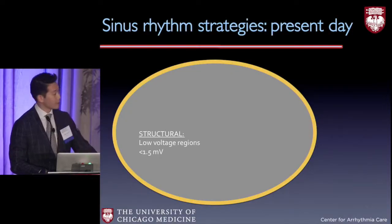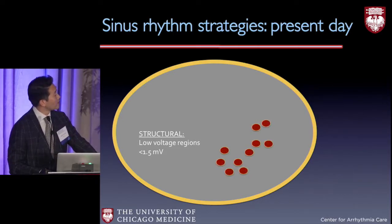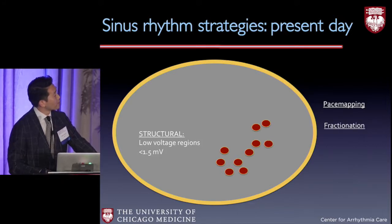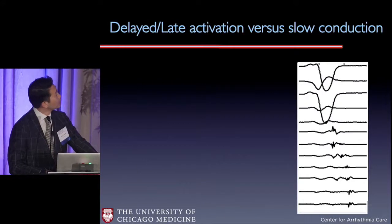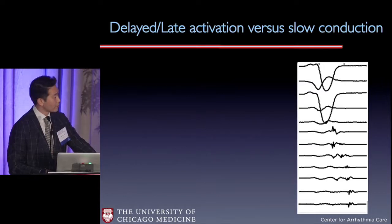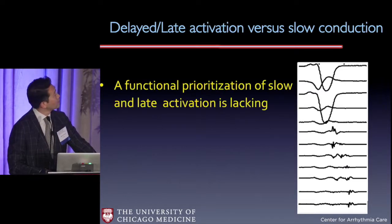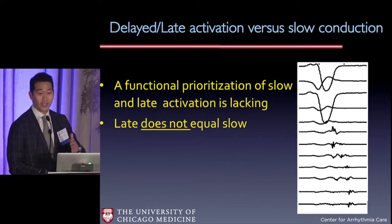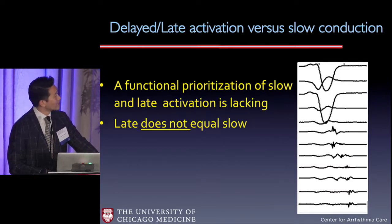The current strategies are to map scar, burn scar, tag isolated late potentials, and with a combination of pace mapping, fractionated or uncoupled potentials are considered important. Homogenization can be done with core isolation or de-channeling. It's important to understand that we often use slow conduction as a ubiquitous term for anything that looks late. But delayed activation versus late activation are different. Slowing requires you to see from point A to point B — late does not equal slow.